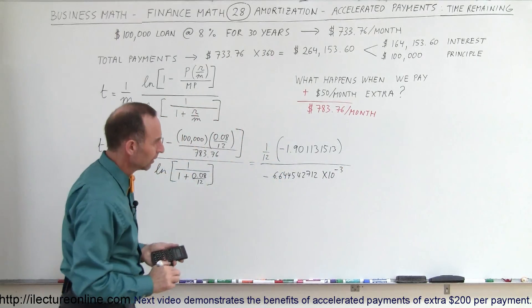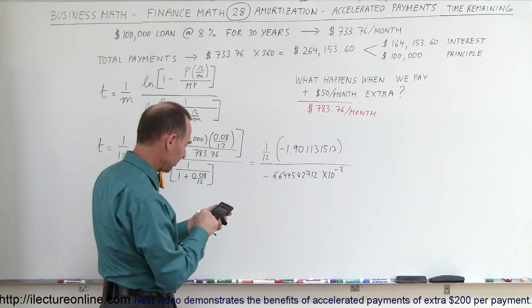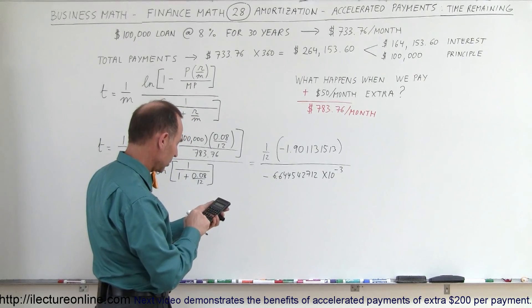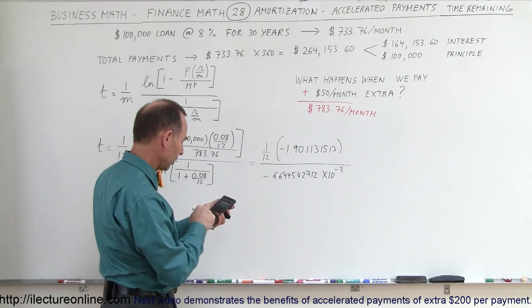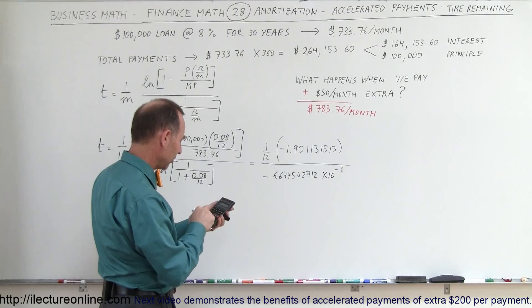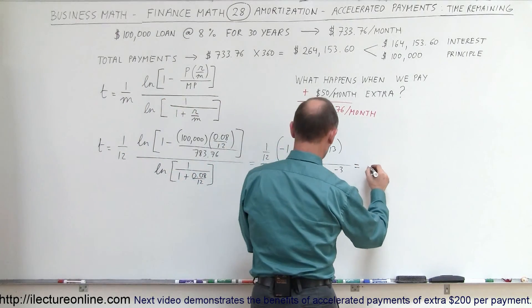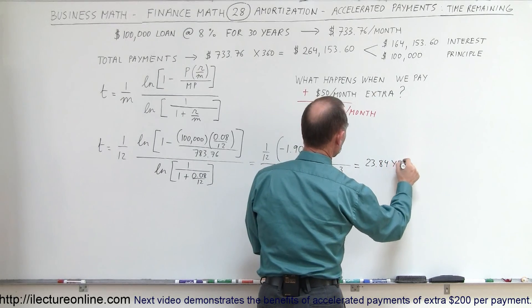All right, I'm going to give the inverse of that, multiply that times 1.901131513 equals minus, and then divided by 12 equals, and the result is 23.84 years.